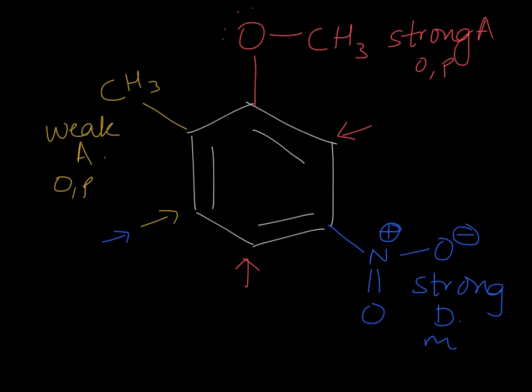And now you have two possible positions the boss prefers, the ortho position here. But that you can say is somewhat crowded or sterically hindered by this group here and this group here. So probably the best course of action or the best spot to pick would be this position, the para position. And actually that is where your new group will end up.